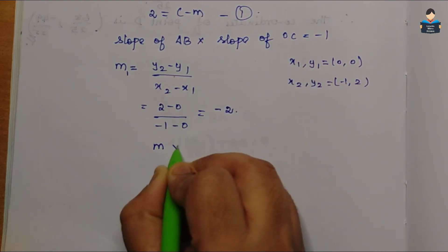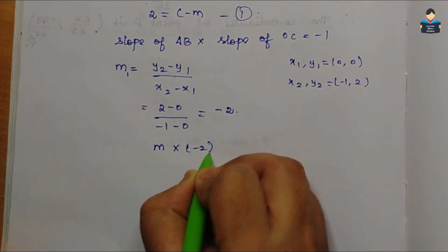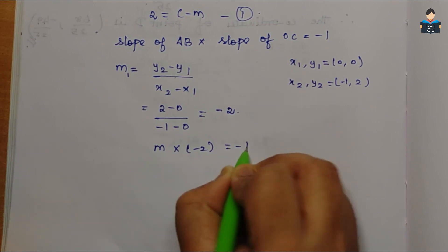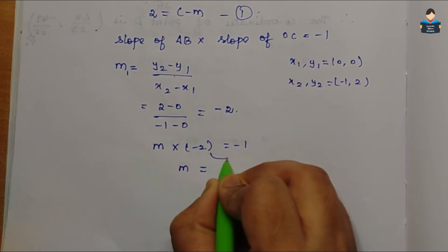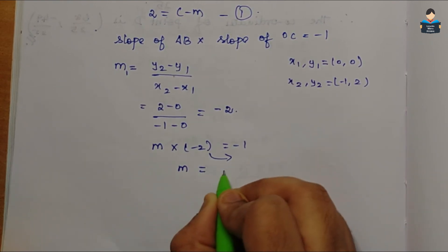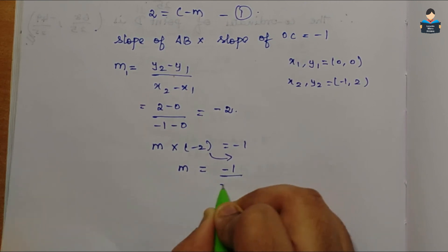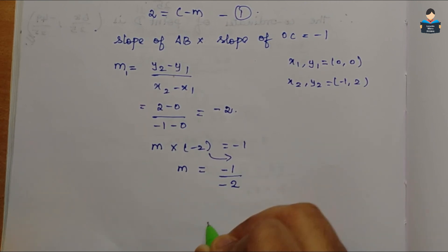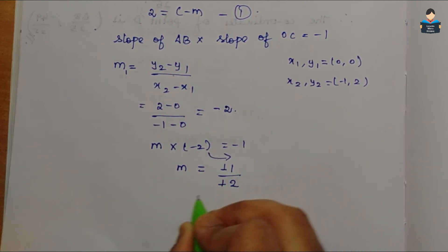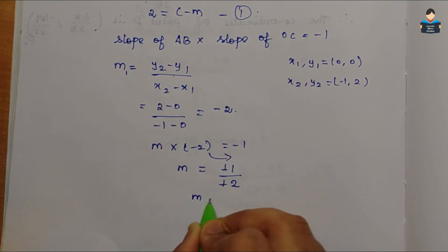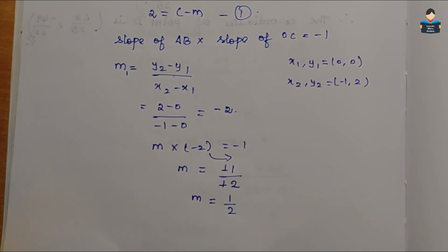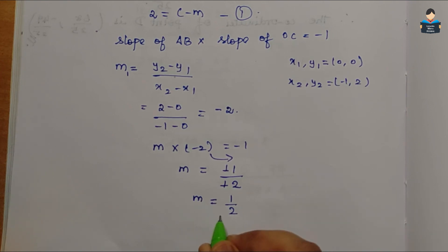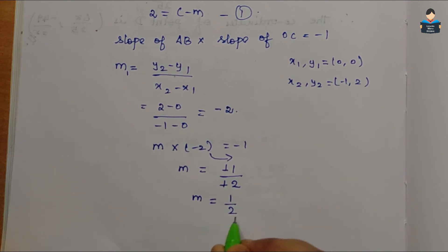Since the lines are perpendicular, m × (-2) = -1. Therefore m = -1 / -2 = 1/2. So the slope of AB is m = 1/2.